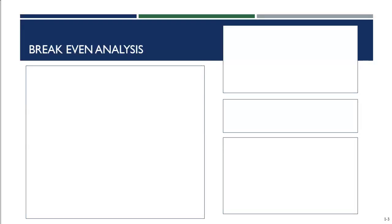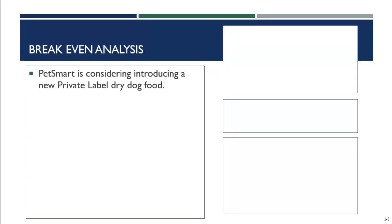The best way to understand this is to work through an example, and then we'll discuss what it means for the retailer. Let's look at PetSmart — this example comes from your book. We'll walk through it together so you have a reference point. PetSmart is considering introducing a new private label dry dog food.